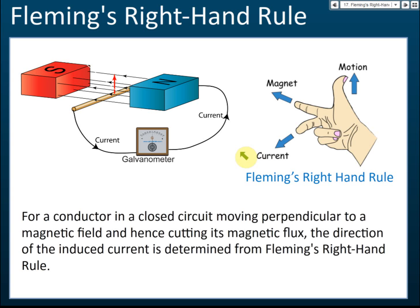The direction of the current can be determined by Fleming's right hand rule. This is different from Fleming's left hand rule — Fleming's left hand rule is used to determine the direction of force when a current-carrying conductor is in a magnetic field. Fleming's right hand rule applies when a conductor moves to cut the magnetic field, producing current. The thumb shows the direction of motion, the index finger shows the direction of the magnetic field, and the middle finger shows the direction of the current.